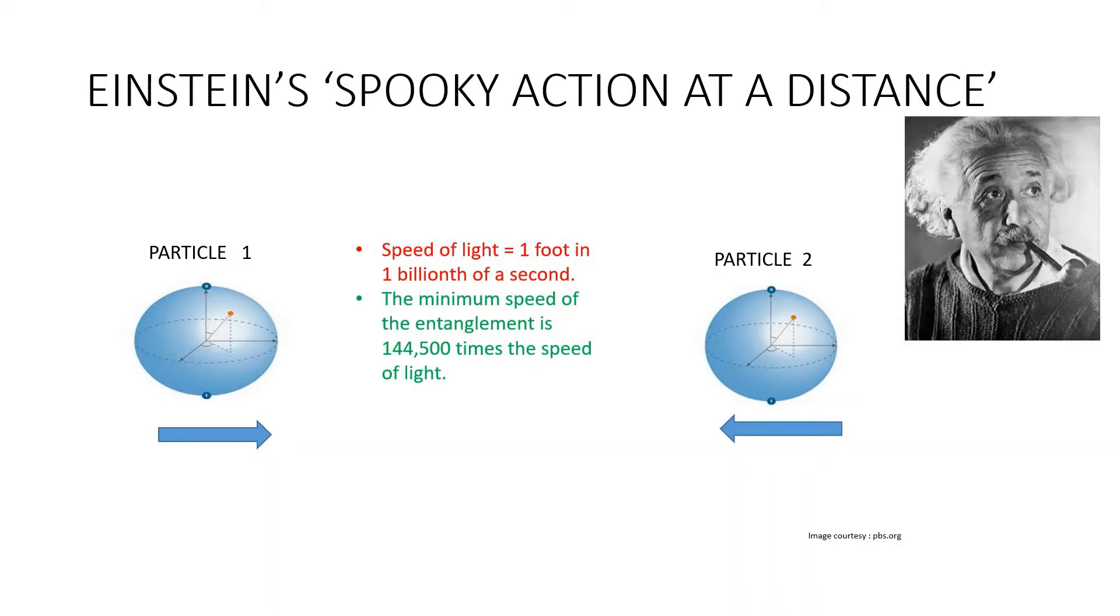Let us assume that the two entangled particles are separated at one foot. After measurement, we understood that the quantum information can travel faster than light. Albert Einstein dismissed quantum entanglement as spooky action at a distance. Over the past few decades, however, physicists have demonstrated the reality of spooky action over ever greater distances, even from Earth to a satellite in space. The minimum speed of the entanglement is 144,500 times the speed of light.